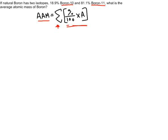So we're looking for the average atomic mass AAM, and we know we have two isotopes, so we'll fill in the brackets the first time here. The first isotope we're looking at is boron-10.